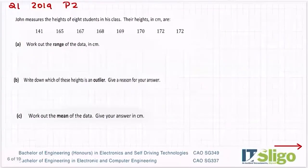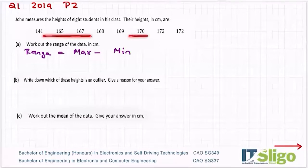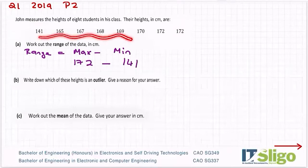So just like we did on our last question from 2014, remember range was equal to the max value minus the min value. So your max value in this one... oh, these are in order, that's really nice. So 172 is your max value, take away your min value, 141. They're not always in numerical order as they are in this question, so that's kind of nice.